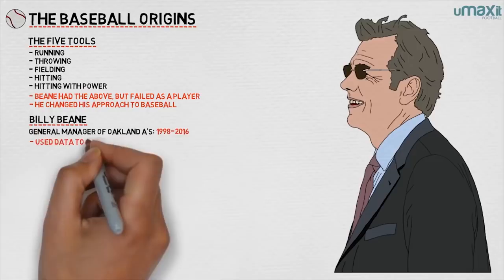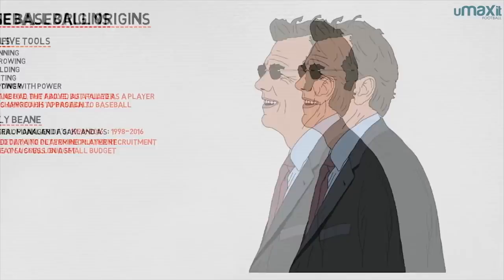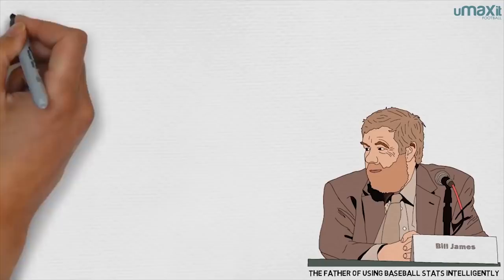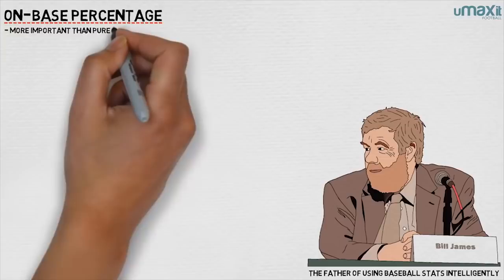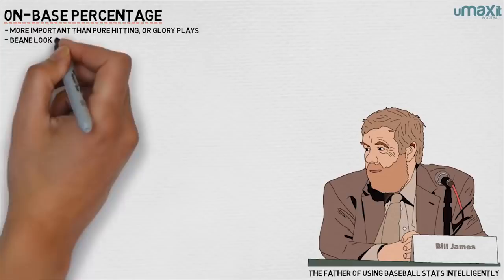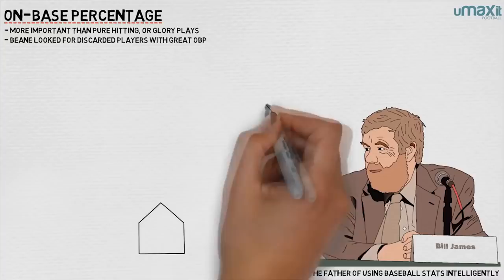Following Bill James, the father of using baseball stats intelligently, Beane realized that on-base percentage — how often a player gets on base — was more important than pure hitting or glory plays like bunts or stealing bases. Beane started to look for players who had been discarded but had great on-base percentage and were therefore undervalued. Baseball didn't take on-base percentage seriously, but Beane did, and he started winning for peanuts.